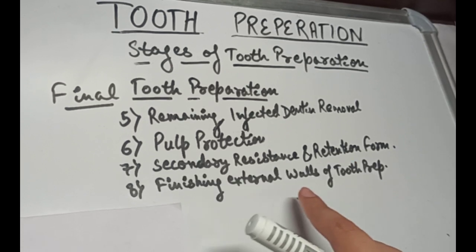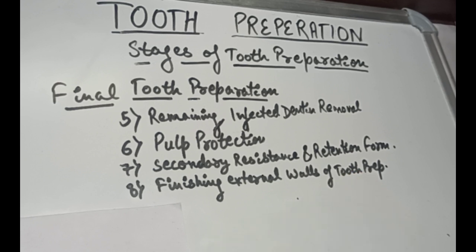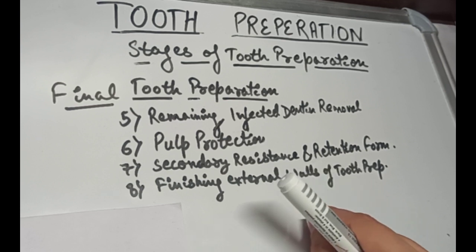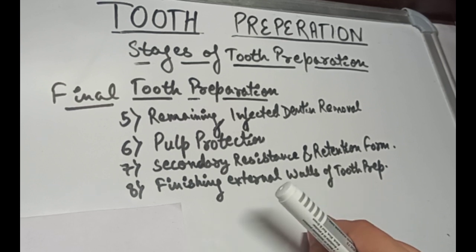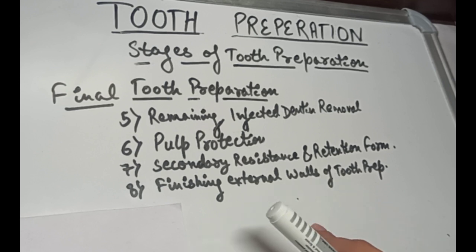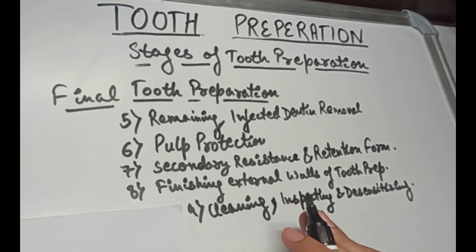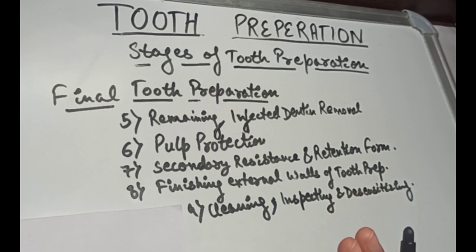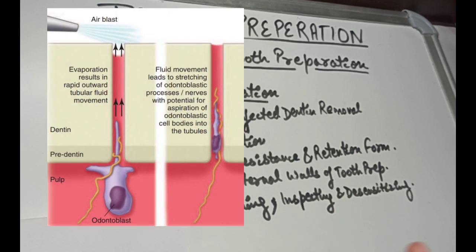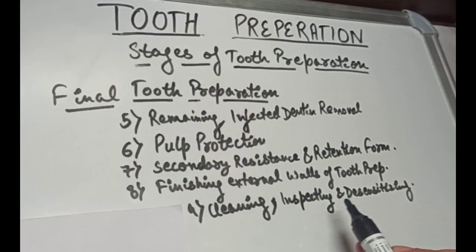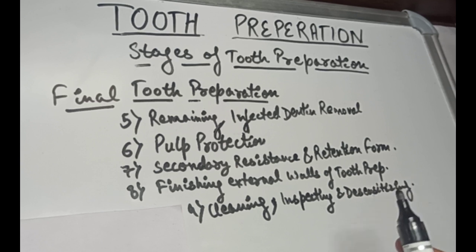The next step is finishing of the external walls of the tooth preparation — establishing the design and smoothness of the occlusal surface margin. The objective is to create an optimal marginal junction between the restorative material and the tooth structure and afford a smooth marginal junction. The last step is cleaning, inspecting, and desensitizing. Cleaning means removal of any visible debris with water and then removal of excess moisture with air syringe — but not dehydrating the tooth by overuse of air, as this may damage odontoblasts associated with desiccated tubules. Then inspecting and desensitizing to limit post-operative sensitivity.